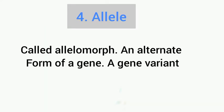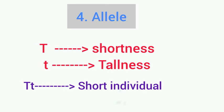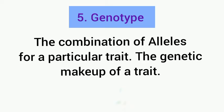The fourth term is allele. An allele, also called an allelomorph, is an alternate form of a gene, or a gene variant. Look at this example: there is a capital letter T for tallness and a small letter t for shortness. When they come together they form a diploid individual.